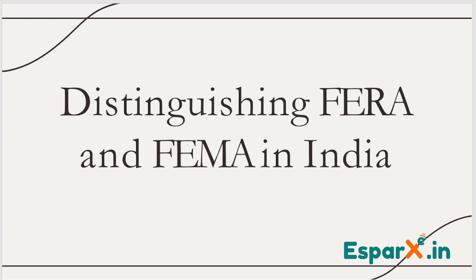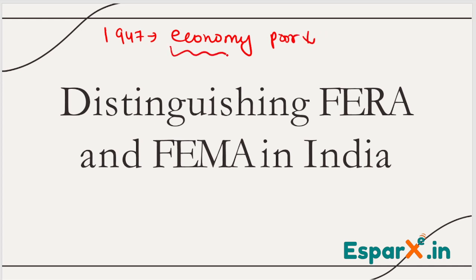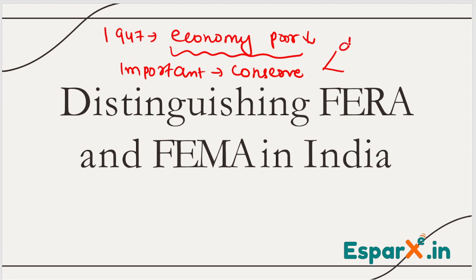We know that India got independence in the year 1947. Just after independence, the economy of India was very poor after the British rule. So it was very important to conserve its resources. Both of these resources needed to be controlled to save the Indian economy and to save the future of India.